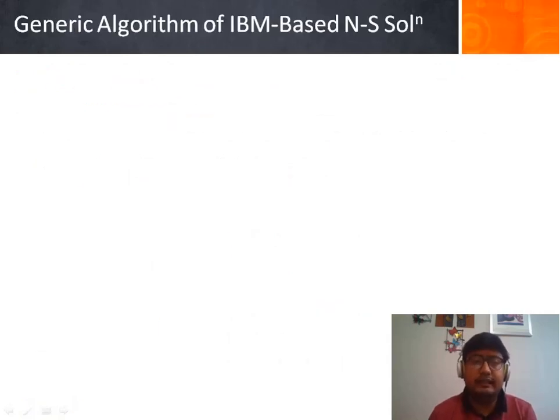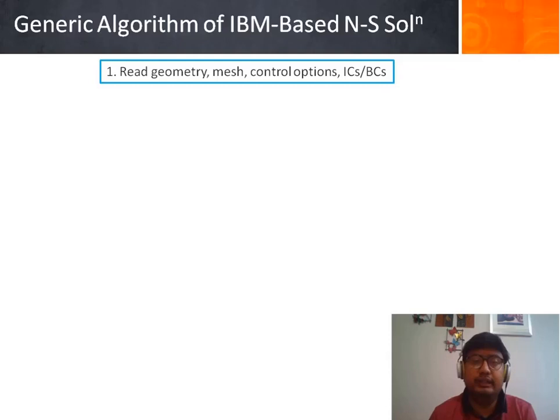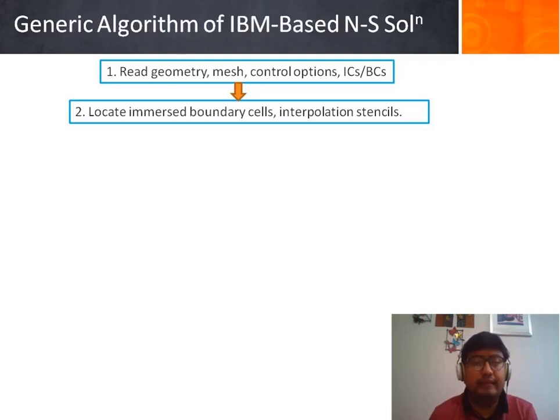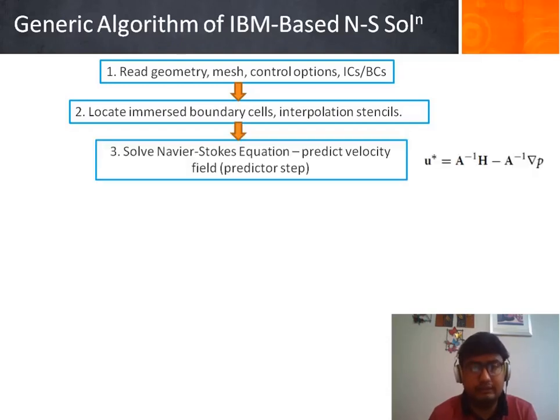The generic algorithm of IBM based Navier-Stokes solution is as follows. The first step is to read the geometry, mesh and control points, initial and boundary conditions. Then to locate the immerse boundary cells, tagging the solid and fluid points and to identify the interpolation stencil.